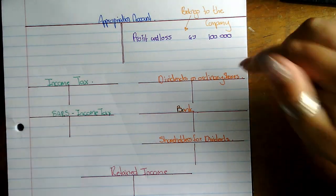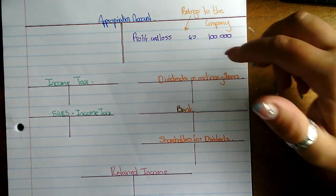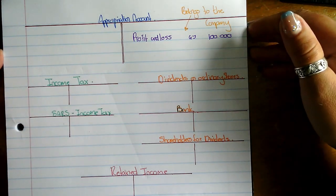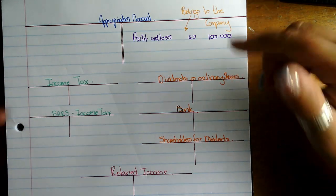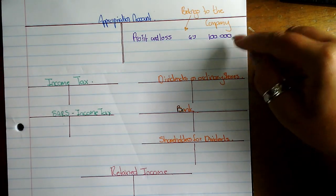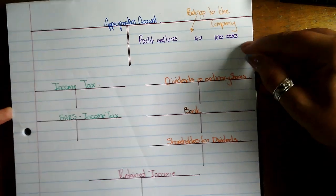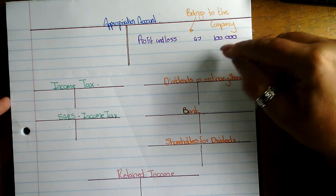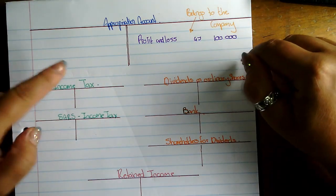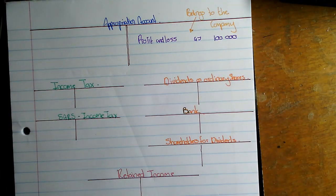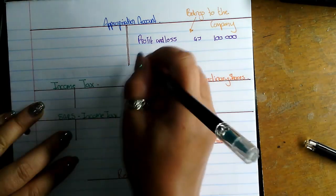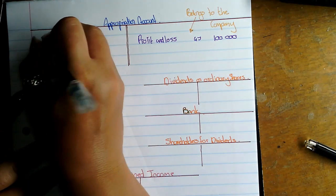The first part of the profit always goes to SARS — it goes towards income tax. Therefore, when we make a profit, the first division of this profit in the appropriation account will go to income tax. This means that part of the profit goes to the account we call the income tax account.